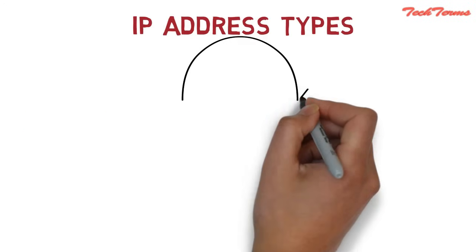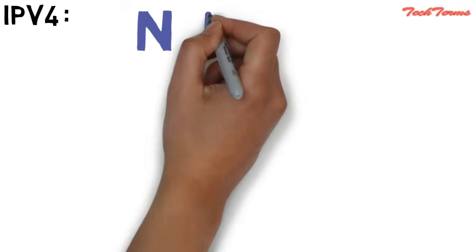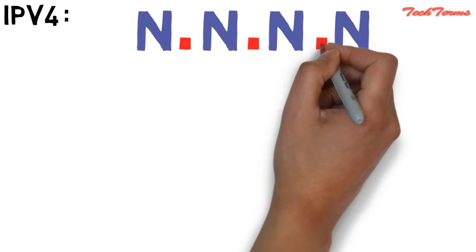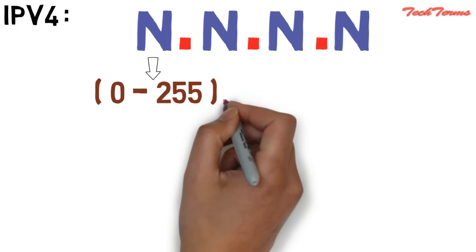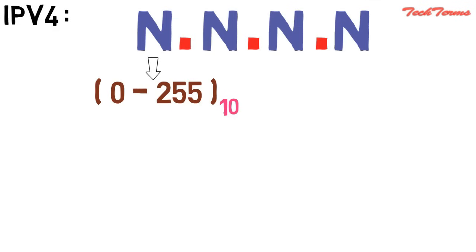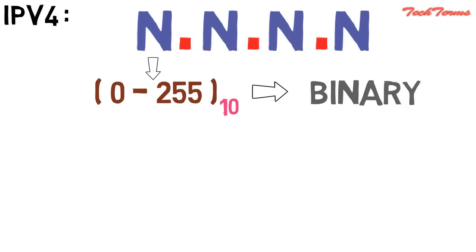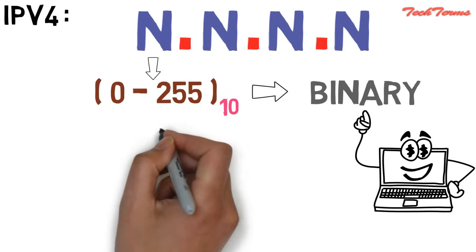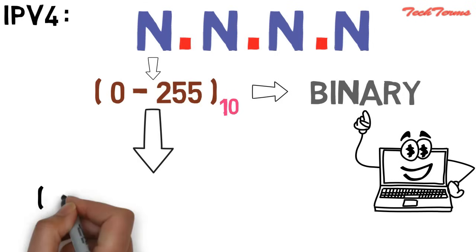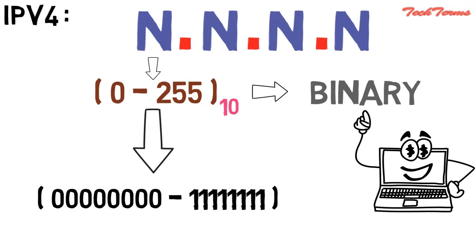IP address is of two types: Internet Protocol version 4 and Internet Protocol version 6. Internet Protocol version 4 consists of four numbers separated by a dot. Each number can range from 0 to 255 in decimal. But computers do not understand these decimal numbers, so these numbers are converted to binary form, which is computer-understandable. Therefore, in binary, this range can be written as 00000000 to 11111111.